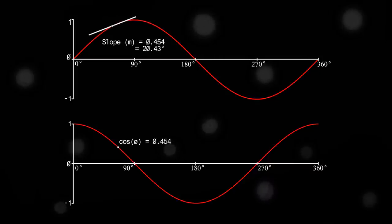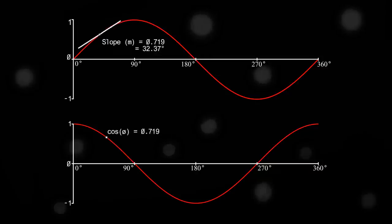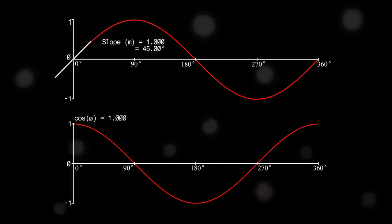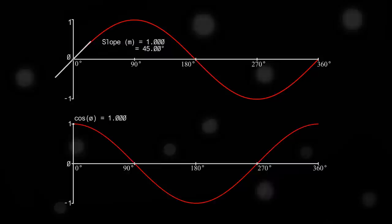From this, we can infer that cosine theta is the derivative of sine theta, or quite literally, that cosine theta is derived from the value of the instantaneous rate of change of the function sine theta.